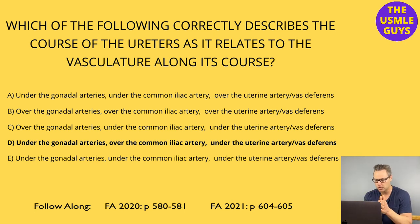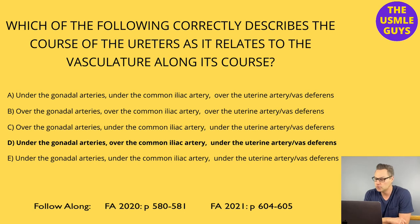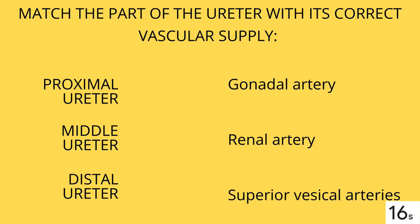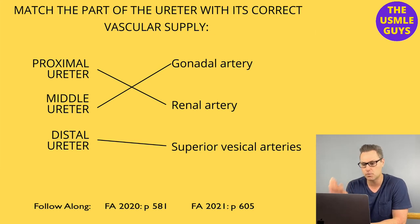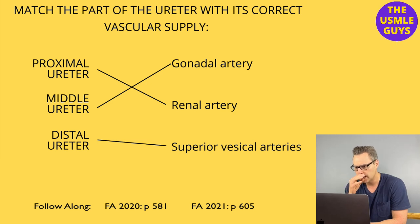I don't want you to guess — I want you to know this stuff. Hopefully you remember this little nugget when it pops up on exam day, because it always seems to. Let's do a matching question — match the part of the ureter with its correct vascular supply. Hit the pause button to figure this out, then come on back. Here are your correct matches. The proximal ureter, the part closest to the kidney, is supplied by the renal arteries.